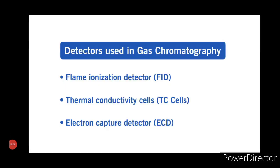Hello friends, welcome back to my YouTube channel. The topic I am going to discuss today is types of detectors that are used in gas chromatography. There are three detectors generally used in gas chromatography. They are first, flame ionization detector, also called FID. Second, thermal conductivity detector, also called TC cells.